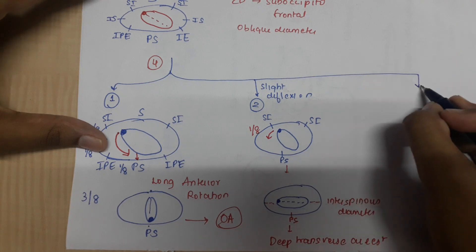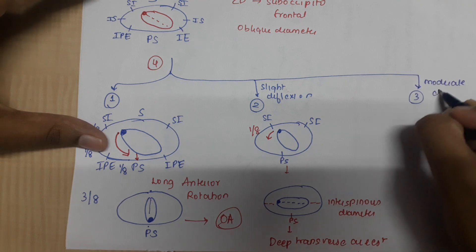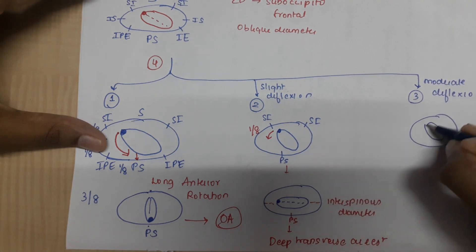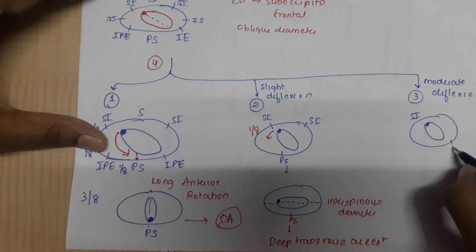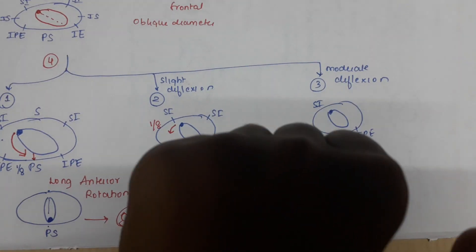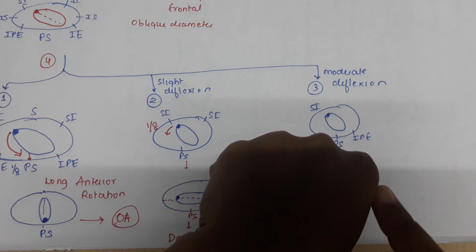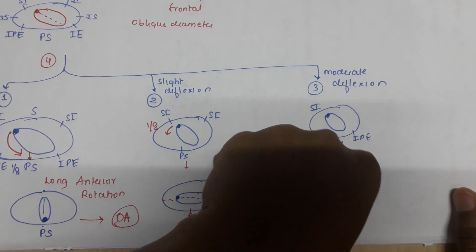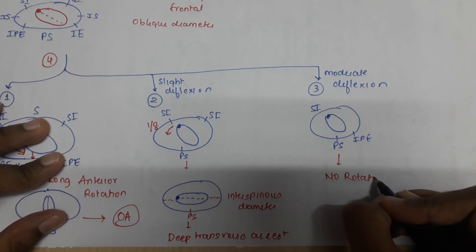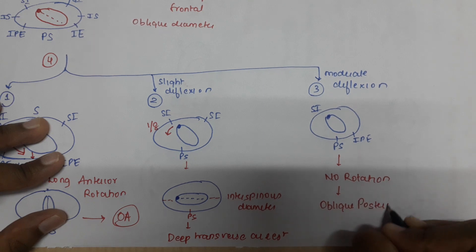The third possibility: if there is moderate deflection of the head, the occiput and the sinciput will hit the pelvic floor at the same time. Because they hit simultaneously, neither point acts as a fulcrum, and therefore there will be no rotation. We call this oblique posterior arrest.